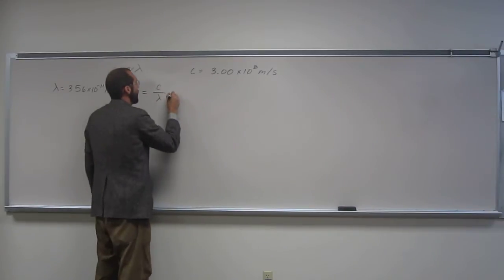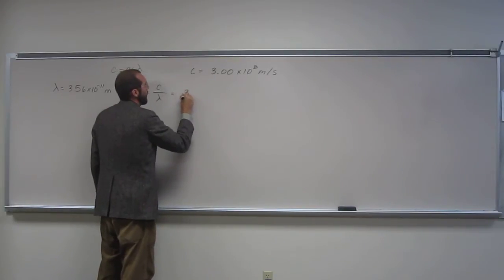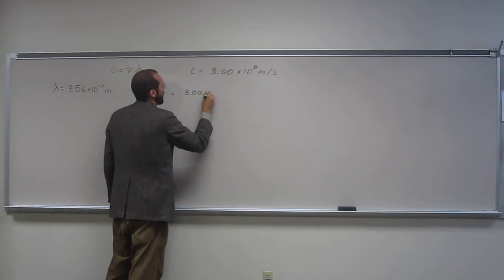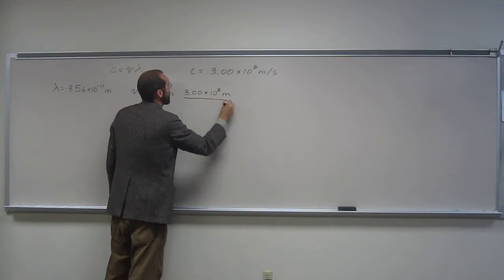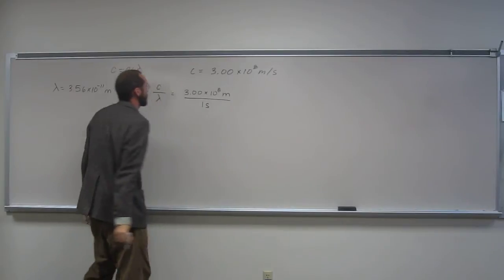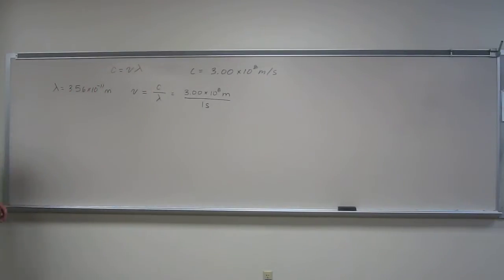So we have the speed of light here, 3.00 times 10 to the 8th meters per one second. And we know the wavelength, so this one's pretty easy, we didn't have to convert anything.